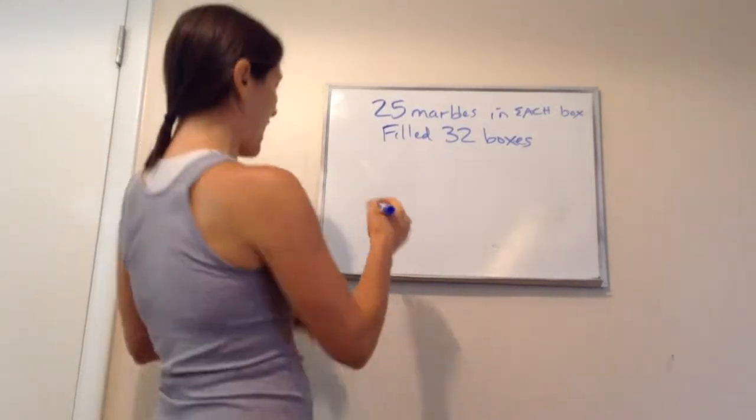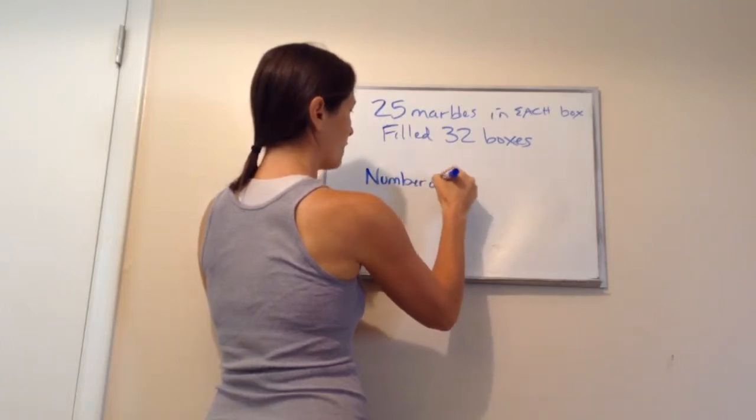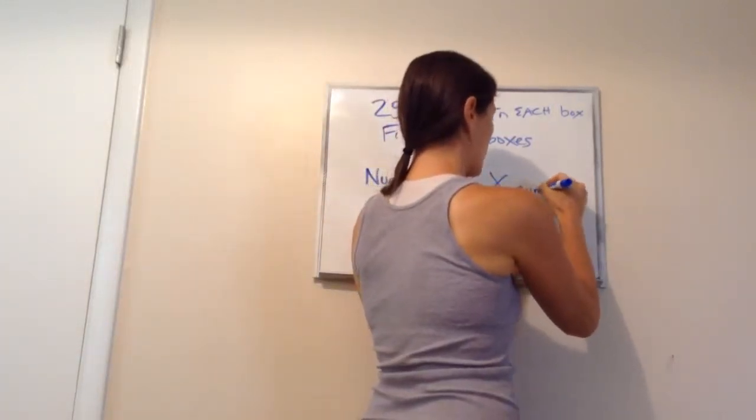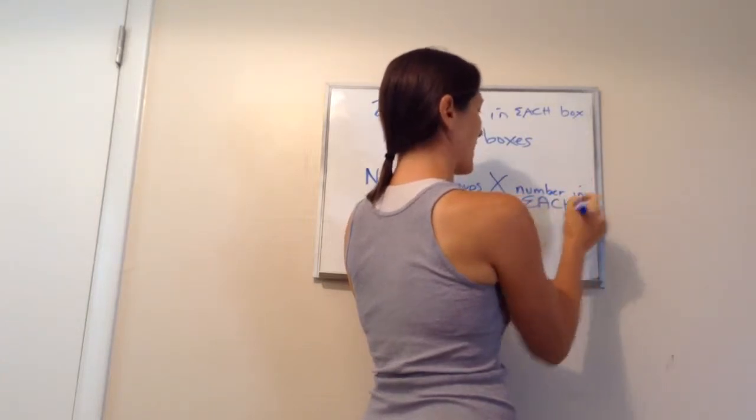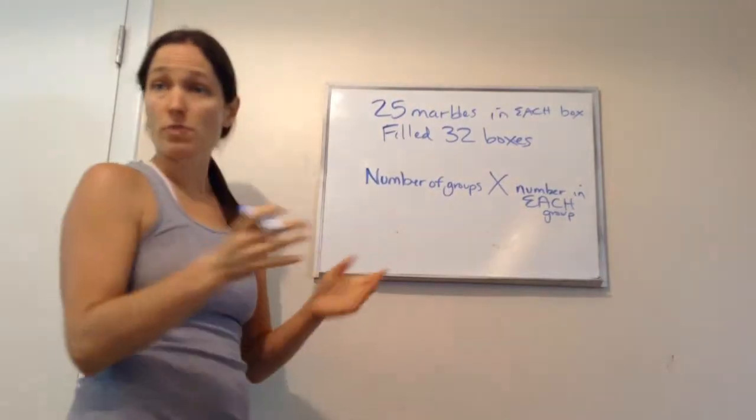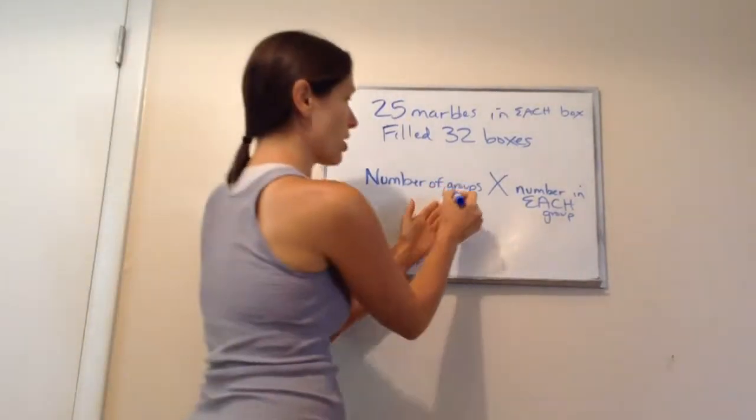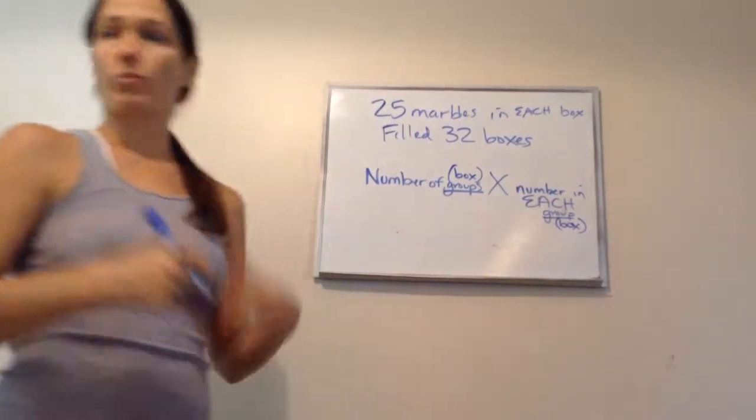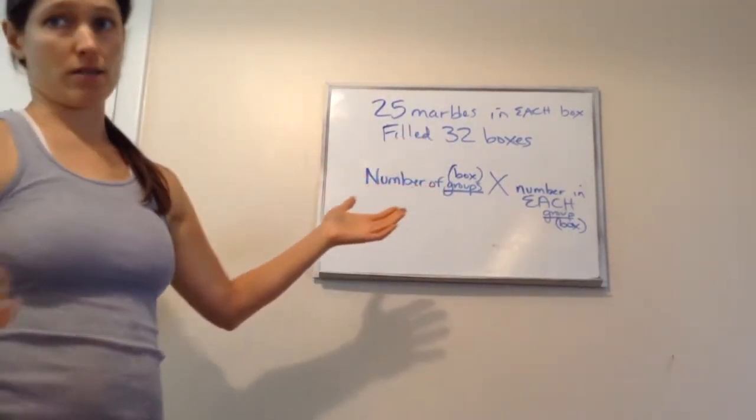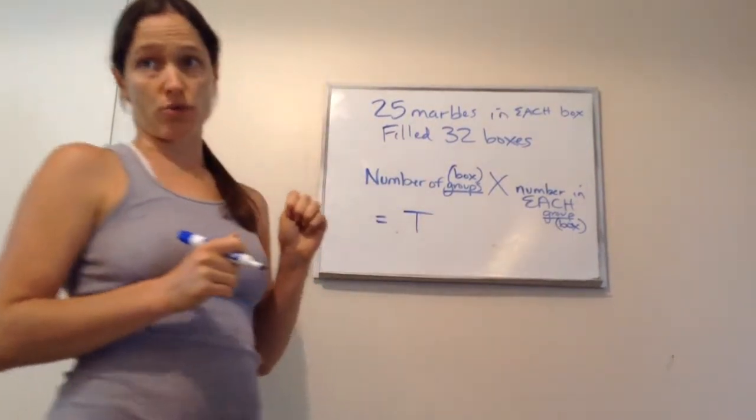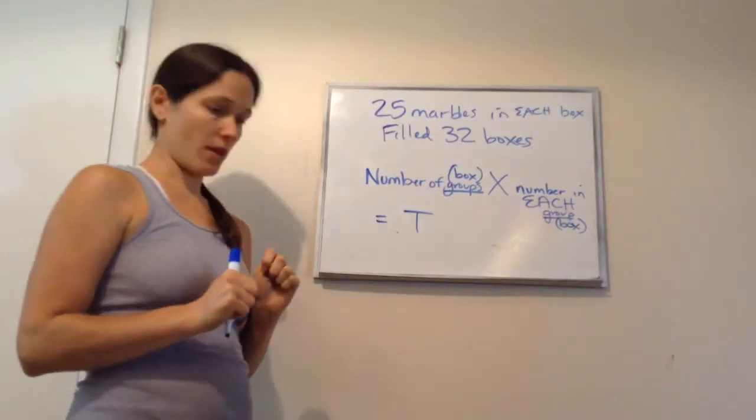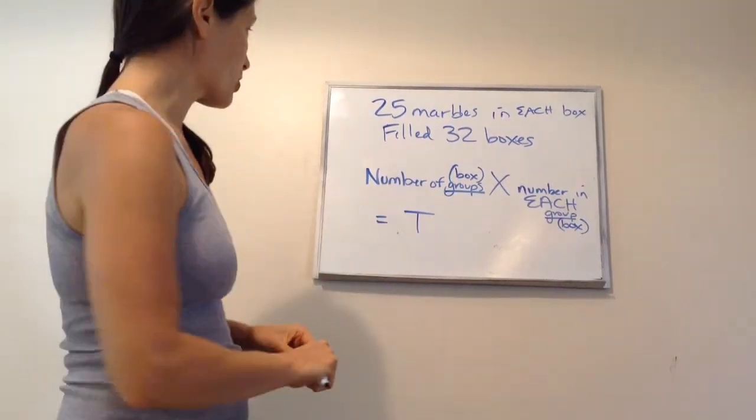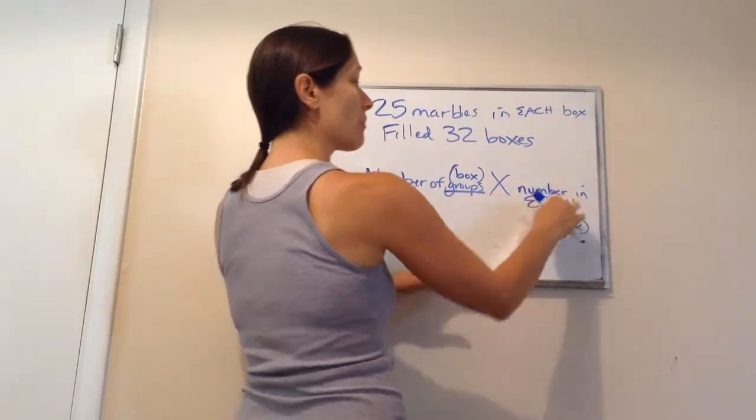So basically what you're going to do is you're going to have a number of groups times the number in, and I'm going to pay attention to this keyword, each group. The groups here is a box. This word number of groups, it's going to be boxes. The number in each, that group word is box. Could be cars, could be anything. Well, this one happens to be boxes. Equals T for total, right? So T stands for total, and if you want to write that down, you can.